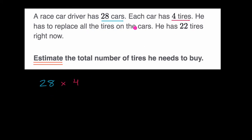And then it says he has to replace all the tires on the cars. And if he didn't have any, this is the number that he would have to replace, but it says he has 22 tires right now. So if we were trying to figure out exactly, you would say 28 times 4, that's how many he needs to replace, but he already has 22, so you subtract that out. And then this whole number would be the number he needs to buy.